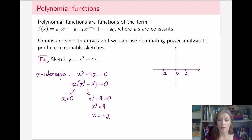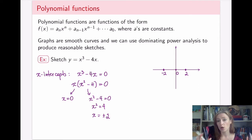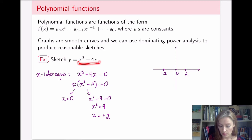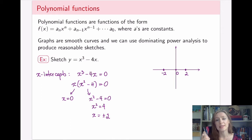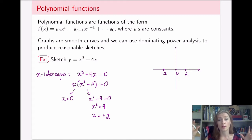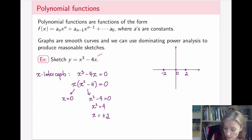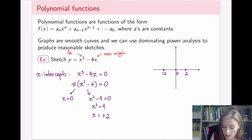Now let's apply the power analysis we used earlier. Small powers dominate near the origin and large powers dominate further away from the origin. Our function has two terms: x cubed and minus 4x. The term with the smaller power dictates behavior near the origin, and the term with the larger power dictates behavior at the ends for large values of x.